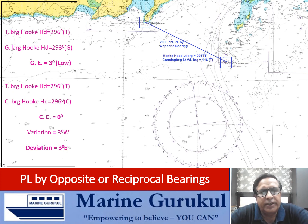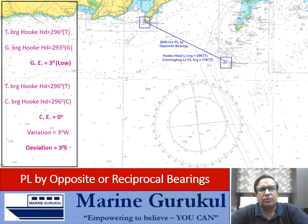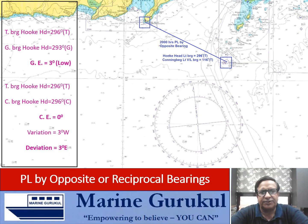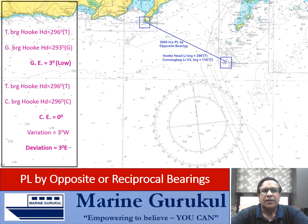The true bearing of Hook Head light is 296 degrees true. The compass bearing of Hook Head light given in the question is also 296 degrees compass. Therefore, the compass error becomes nil or 0 degrees. If variation is 3 degrees west, then the deviation must be 3 degrees east, making the compass error 0 degrees.